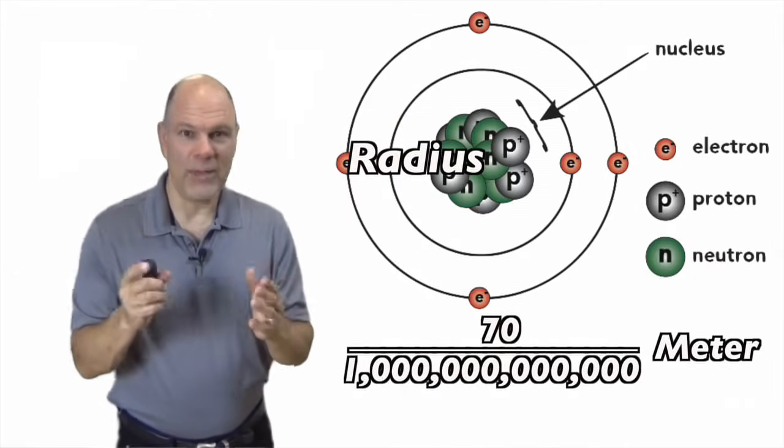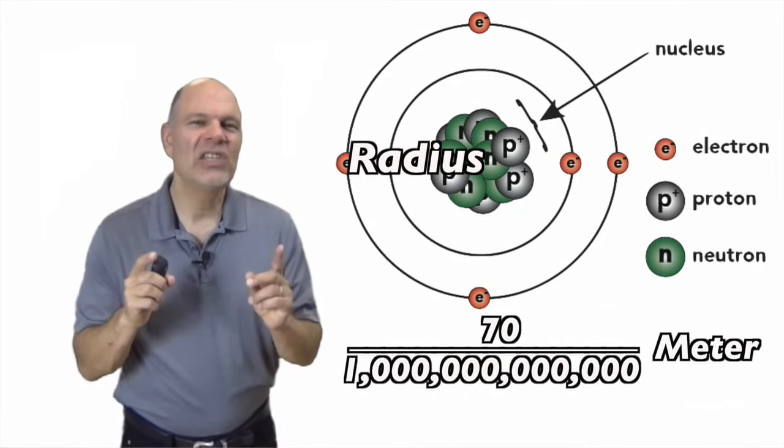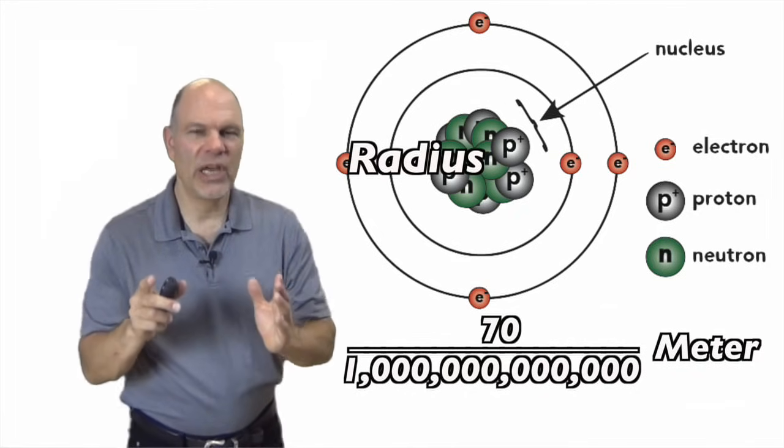The radius of a carbon atom, one of the most important atoms in living things, is 70 trillionths of a meter.